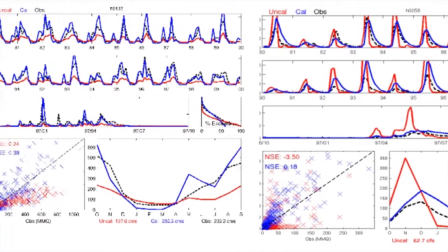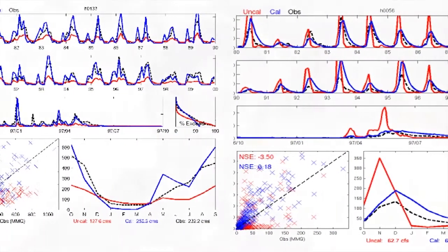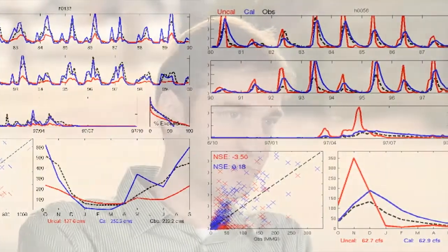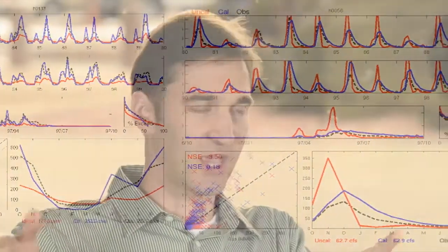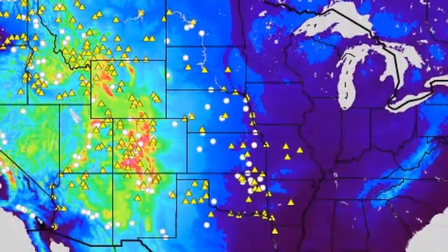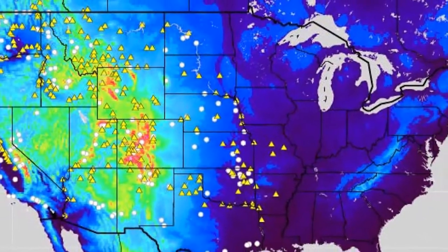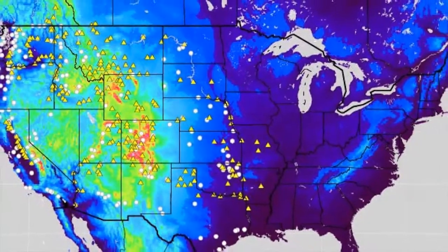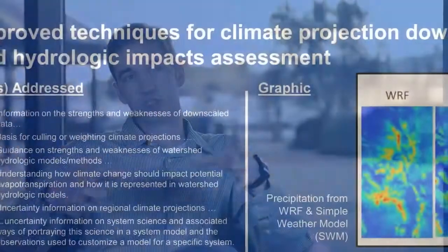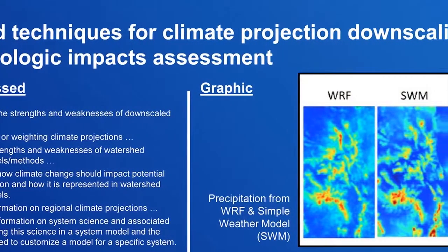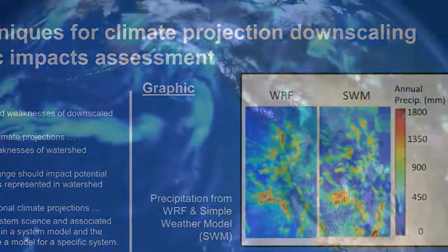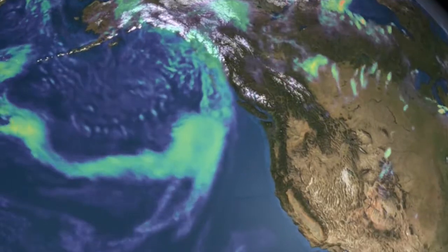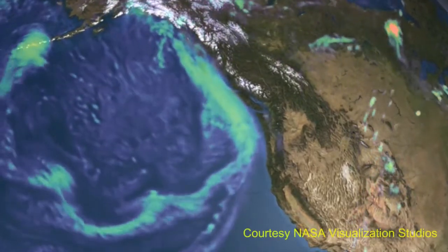A lot of existing methods take climate model precipitation, which is spread evenly over a large area, and try to downscale it using relationships developed at individual points. Very often they don't recreate the spatial variability in precipitation that we see in the real world, and this leads to downscaled precipitation amounts that are far too large when you average over an entire basin for extreme events.